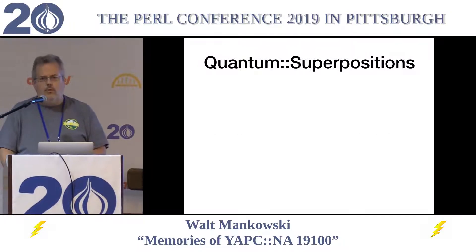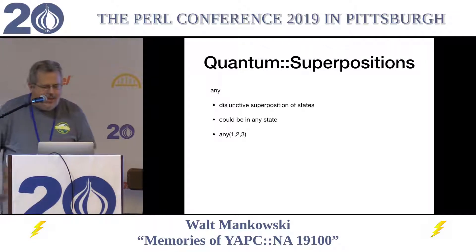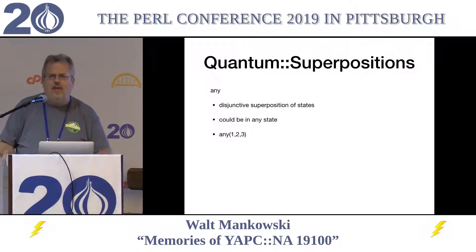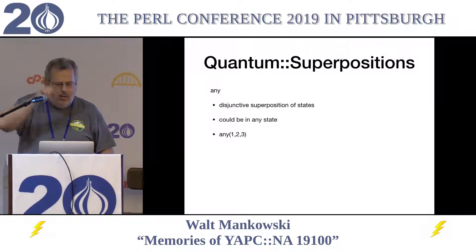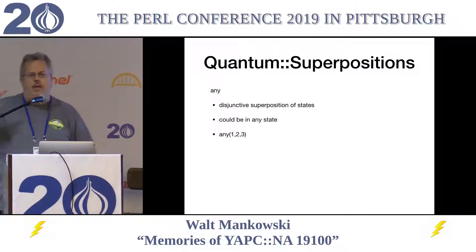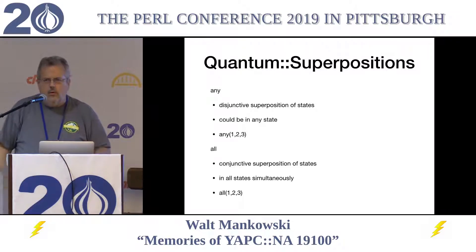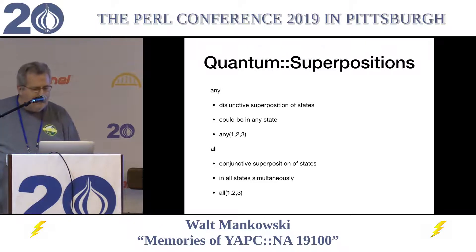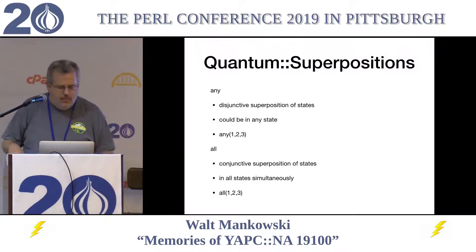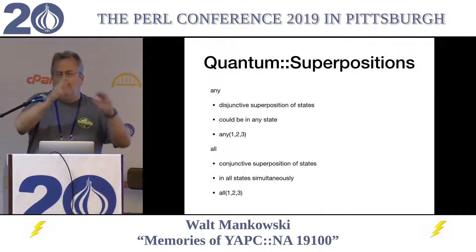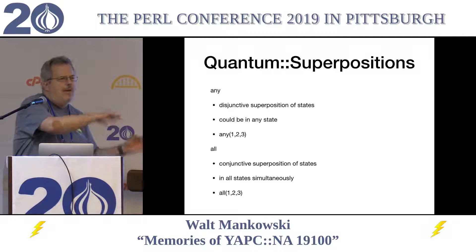It gives you two new keywords. One is `any` — technically it's the disjunctive superposition of states — which really means a variable that can be any one of a number of states. So `any(1, 2, 3)` means that variable could be one or two or three. It also gives another keyword called `all`, which is a conjunctive superposition — it's in all of those states simultaneously: one AND two AND three. It's the idea of Schrödinger's cat, which is both dead and not dead — the same idea, but with variables.